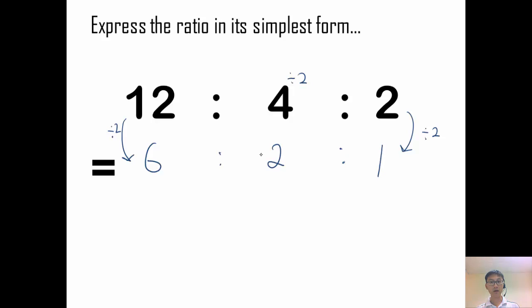Can I simplify it further? Although you might be tempted to because 6 and 2 can be simplified further. But remember this. When we are trying to simplify a 3 quantity ratio, all 3 must be divided by the same number. So 1 cannot be divided by 2 because that would give me half. So this will be my simplest form.